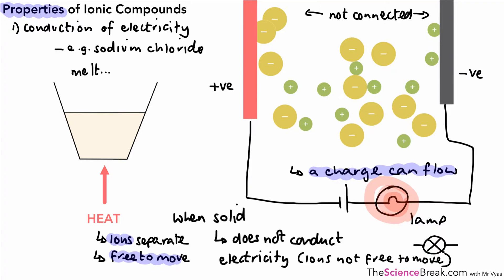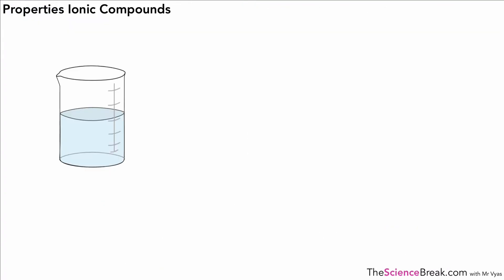Now that's not the only way we can get the ions to move in an ionic compound. We can actually take our sodium chloride, which is actually common salt, dissolve it in water, and that would have the same effect of pulling apart the ions so they would also be free to move if we dissolved the ionic compound in water.